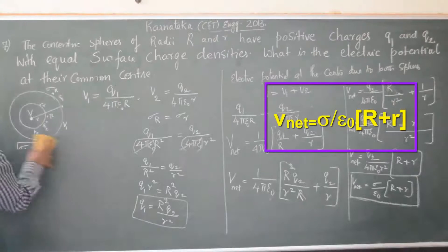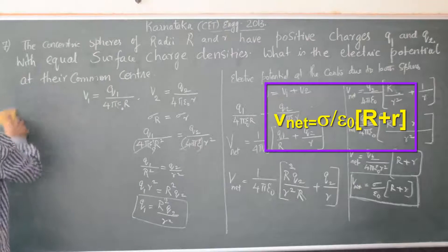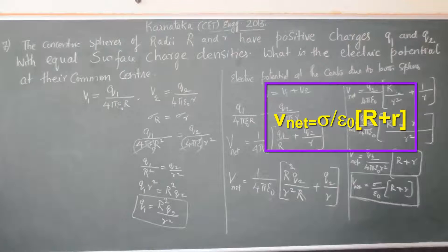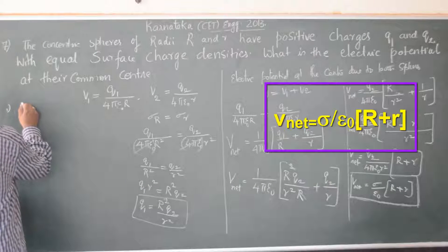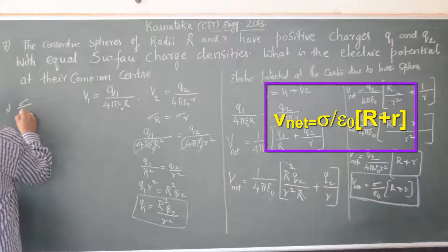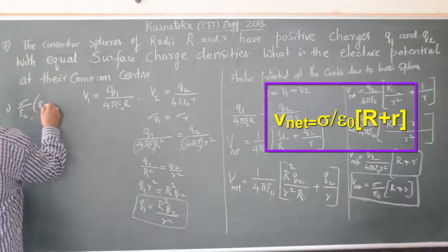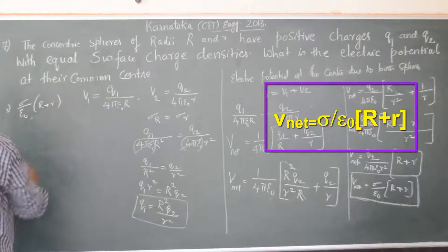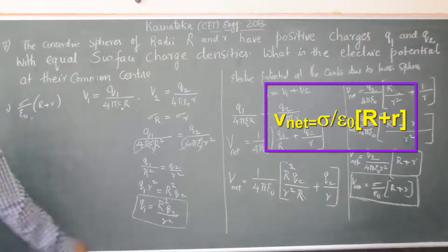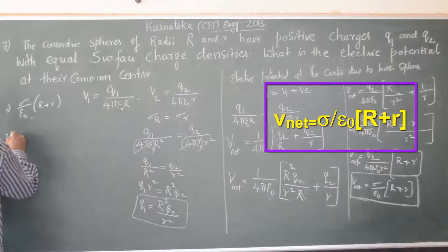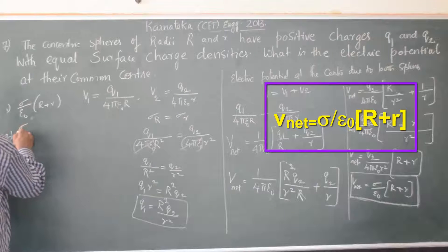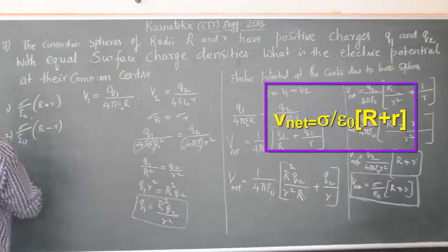From the question paper, the four alternatives are: number one is sigma divided by ε₀ times (R plus r), which is the correct answer. The second alternative is sigma divided by ε₀ times (R minus r).